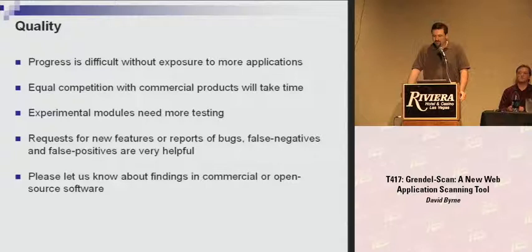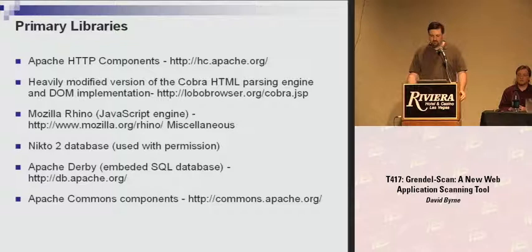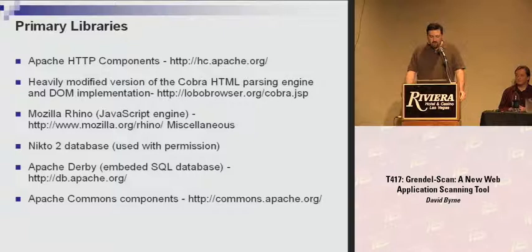One advantage of making Grindle open source is that many libraries become available that a commercial product would have to write from scratch or purchase. A few particularly helpful ones: the Apache HTTP components library is, in my opinion, the best Java HTTP library out there. Lobo is an all-Java web browser. Grindle doesn't use Lobo, but a partner project called Cobra is an HTML parsing engine and DOM implementation. Grindle uses a heavily modified version of Cobra, useful for spidering, testing cross-site scripting, and modeling real-world browser behavior. Mozilla Rhino is the all-Java version of the Firefox JavaScript engine, also used for testing cross-site scripting.